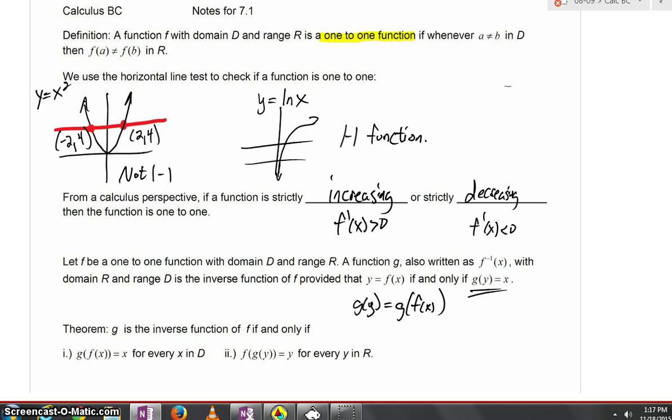Here's some Algebra 2 and AMA review. A function is 1 to 1 with domain D and range R if whenever A is not equal to B in the domain, whenever you have two different x values, f(A) will not equal f(B) in the range. The two y values are different. We could use a horizontal line test to determine if a function is in fact 1 to 1.